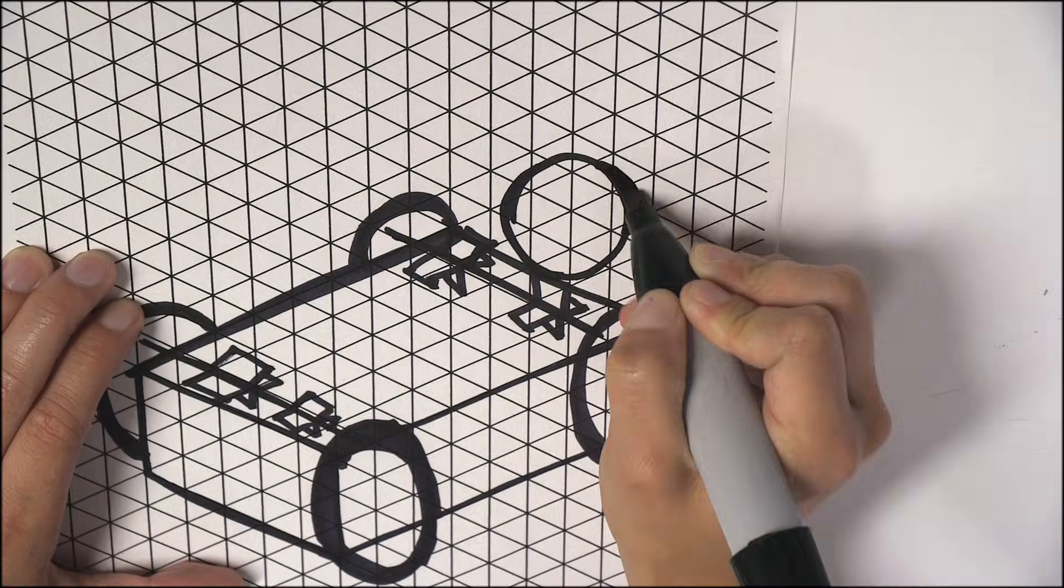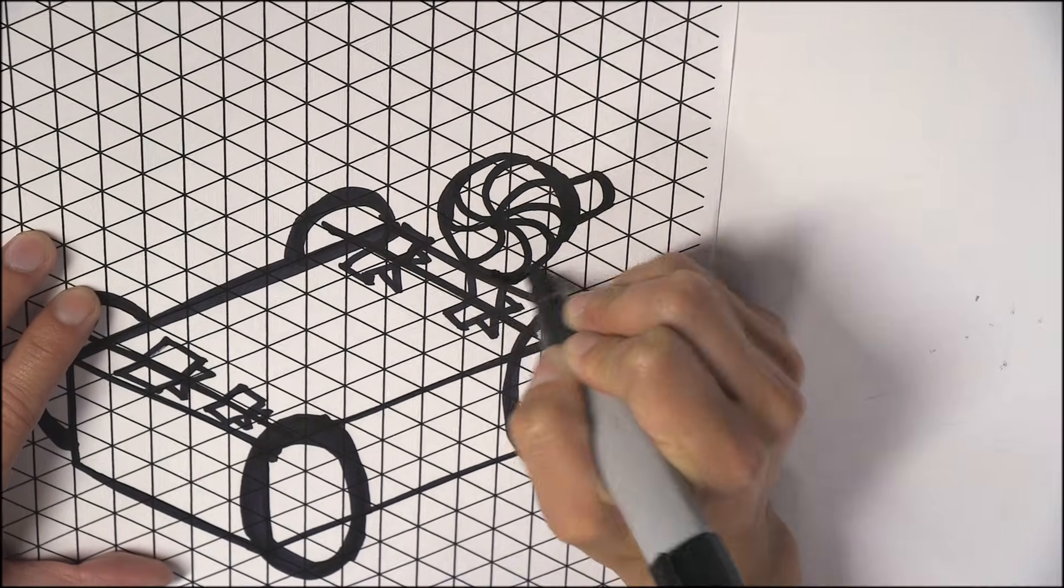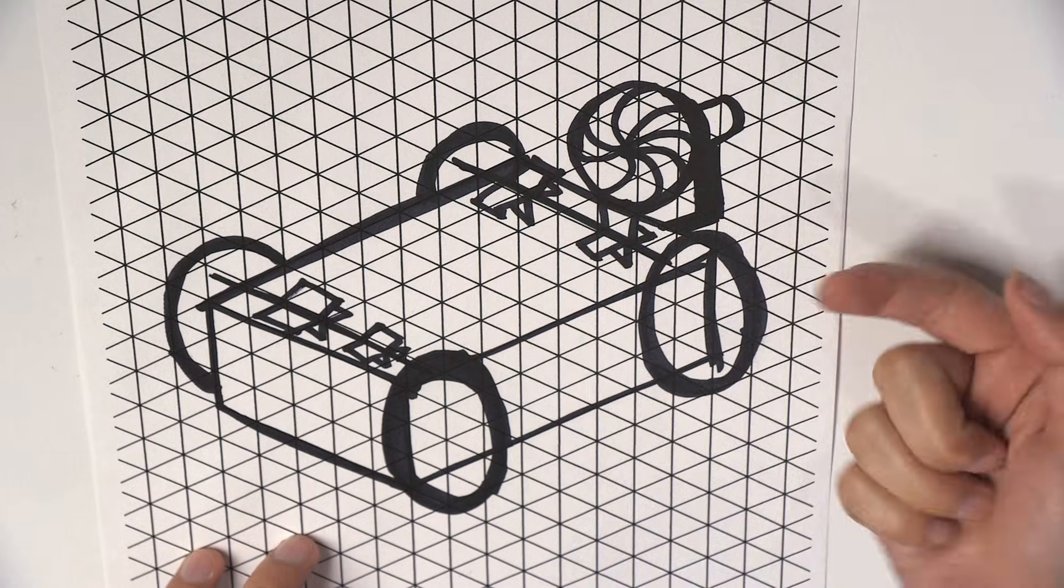Now it's time to draw our fan. The wind from the fan is going to blow against the blades, which are going to rotate our wheels.